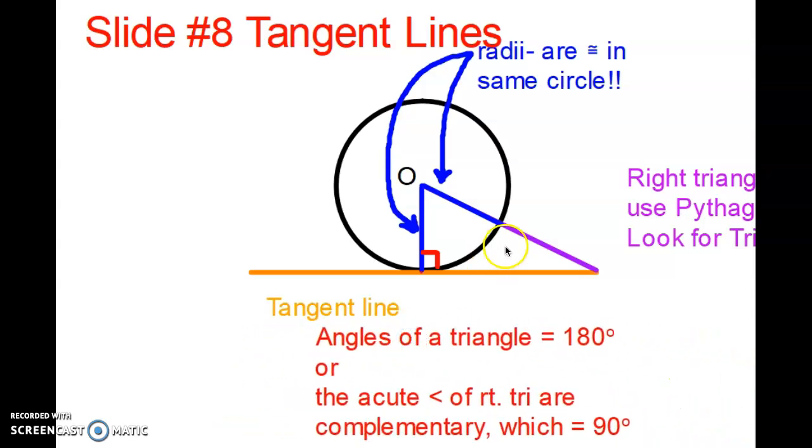We know that angles of a triangle, here's a right triangle and we know that the angles add up to 180 or you could have said that this angle and this angle are complementary, which means they add up to 90. So just remember when we draw the radius to the point of tangency, we have a right angle and then you want to be looking for right triangles.